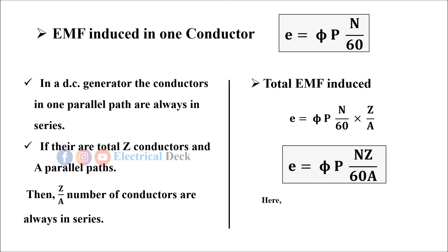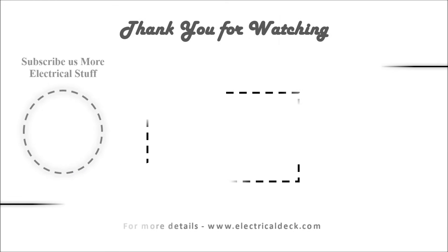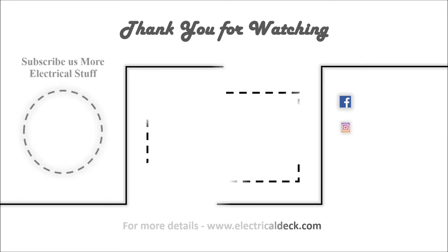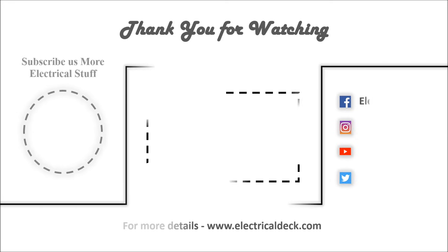Here, A = P (total number of poles) for lap winding, and A = 2 for wave winding of the armature. Thank you for watching, see you soon again, and don't forget to subscribe to the channel.